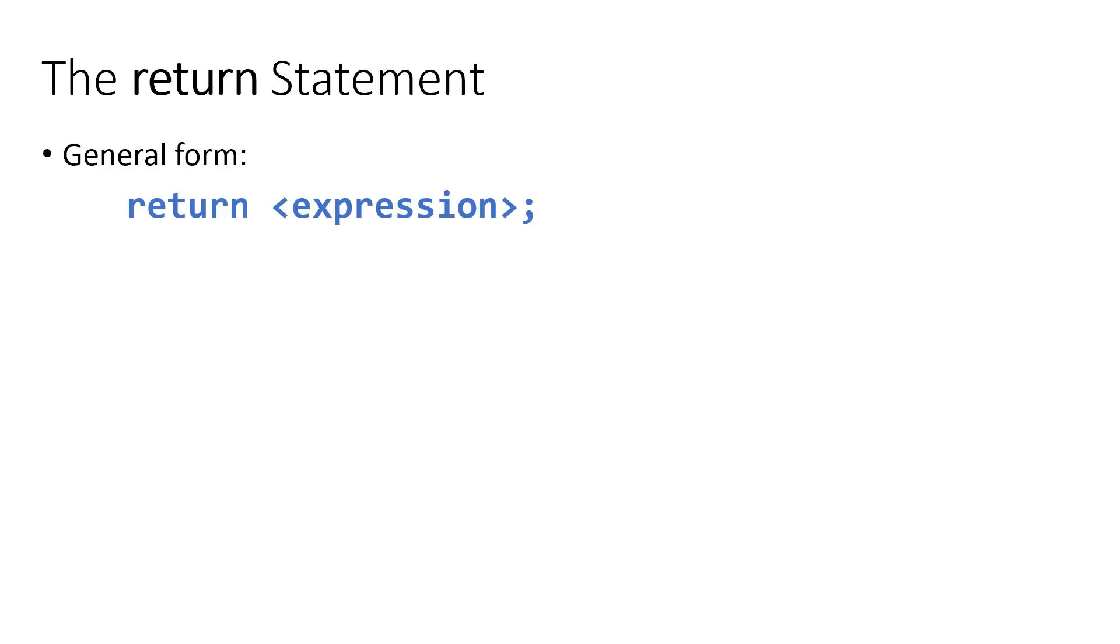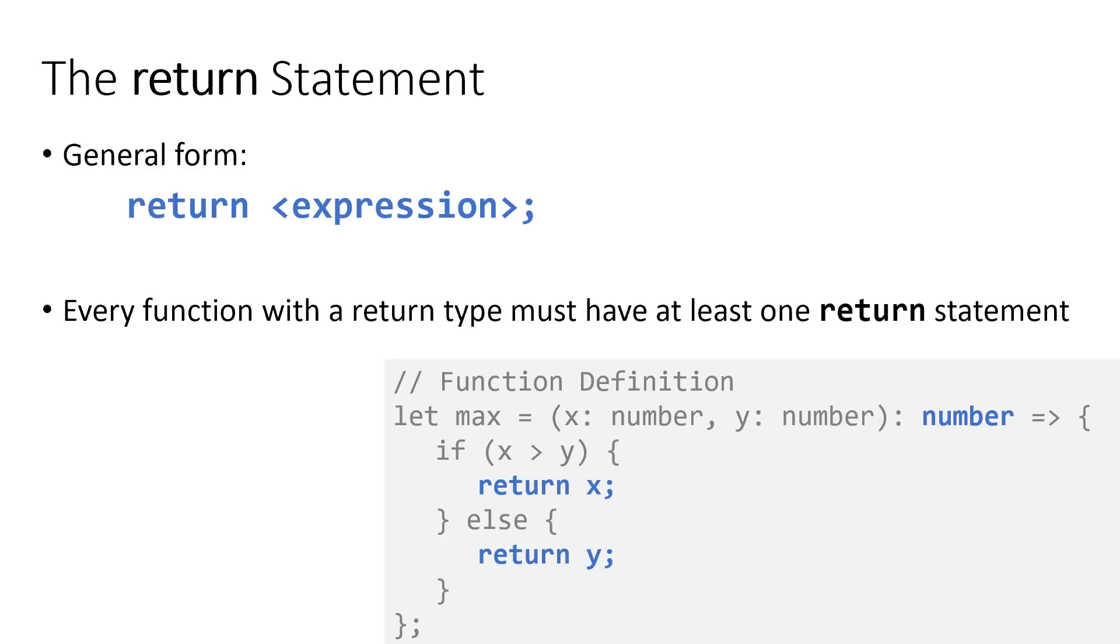In this video, let's take a look at the return statement with a little bit more detail. The general form of a return statement is the return keyword followed by some expression or some value. Every function with a return type must specify at least one return statement inside of its function body. So the return type of a function is specified here after the colon in the parameters, and the return type of this max function is a number.